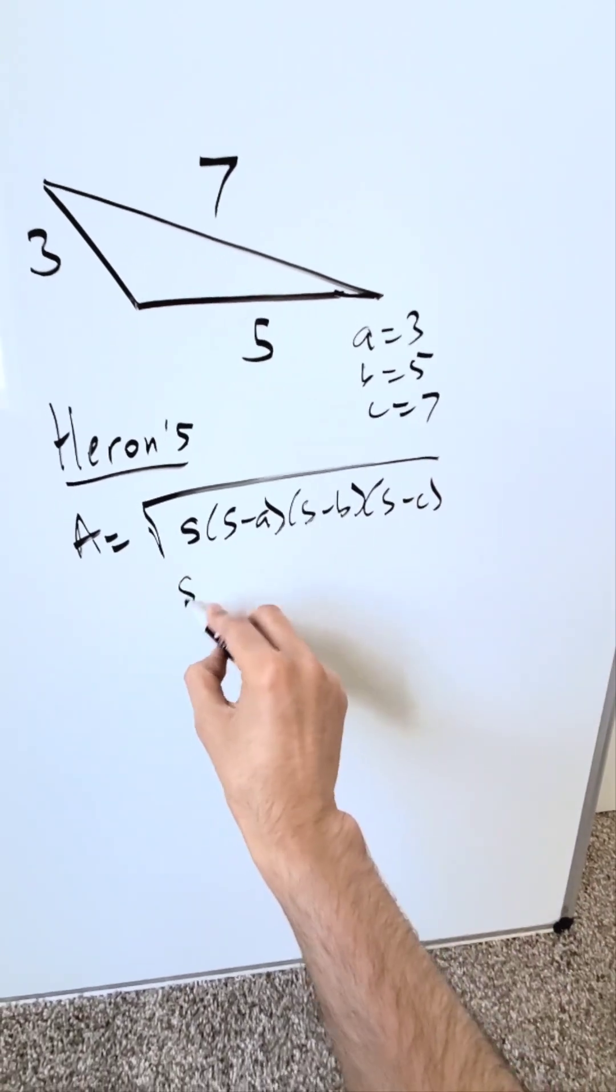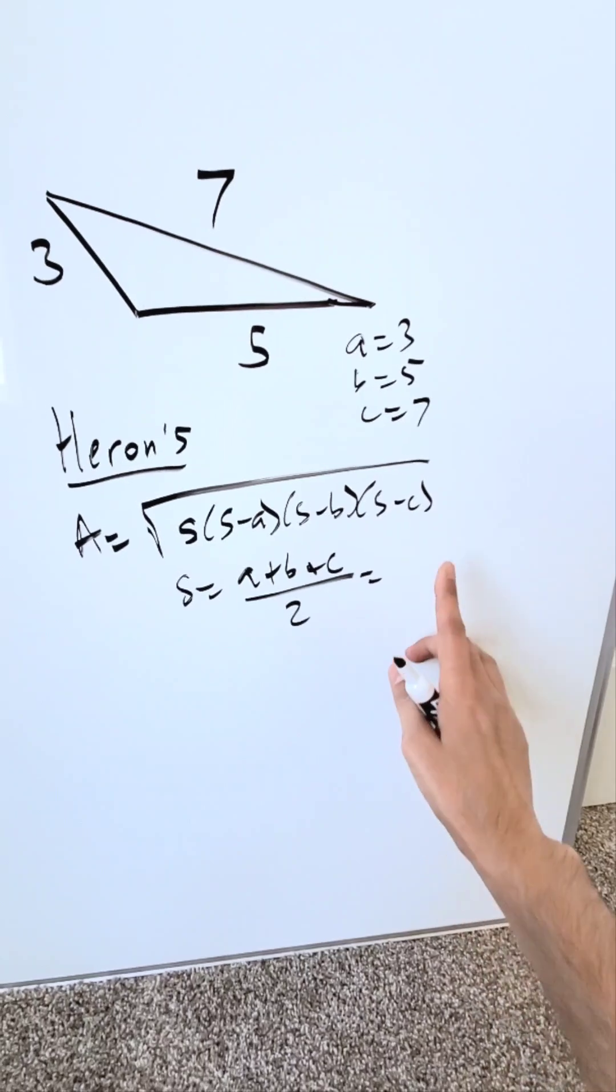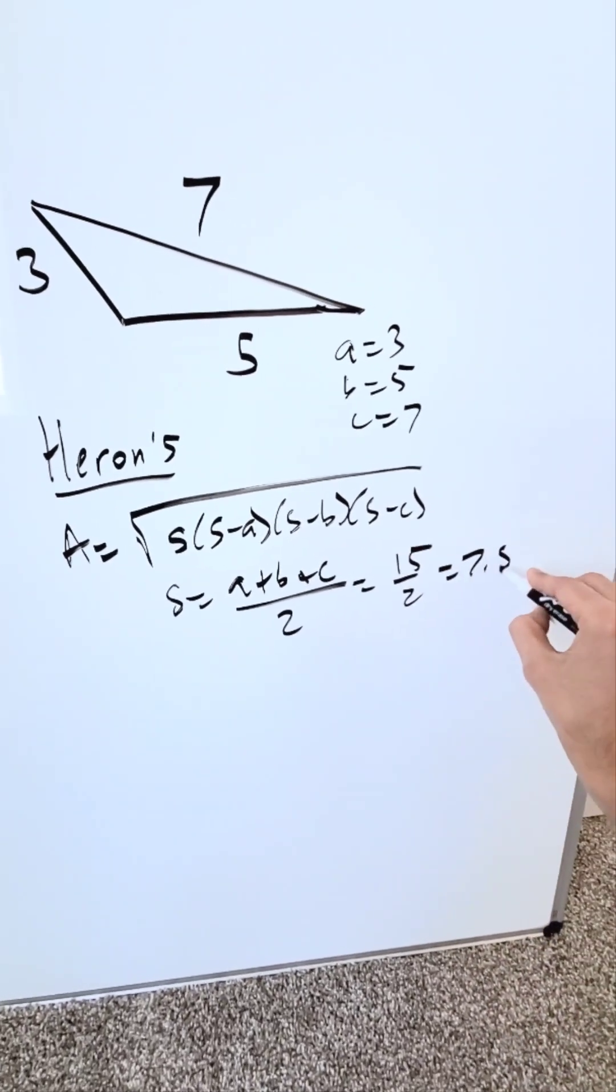What's s? It's equal to this item here, a plus b plus c, the sum of your sides divided by 2. I have 3 plus 5 plus 7 is 15 over 2 and you know that to be 7.5.